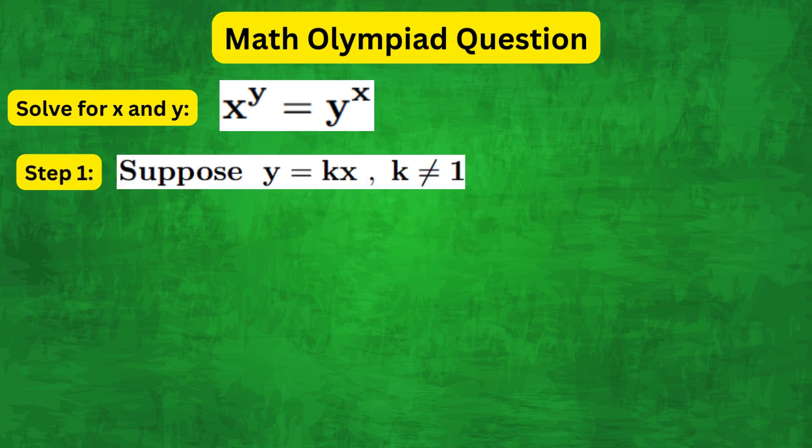So the first step to doing that is to suppose that y equals kx, where k is a constant and k is not equal to 1, which as we shall see later on is actually quite important.